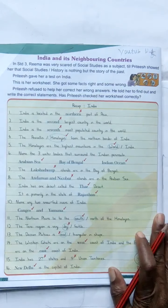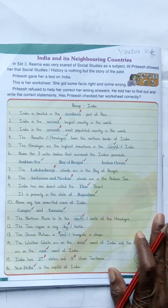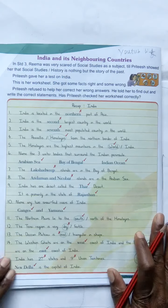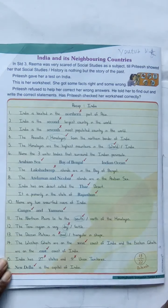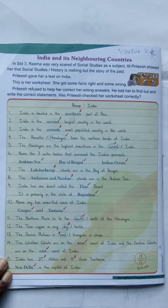India has neighboring countries. How many neighboring countries? India has 9 neighboring countries. They are Pakistan, Afghanistan, Nepal, Bhutan, China, Bangladesh, Myanmar, Sri Lanka, and Maldives.